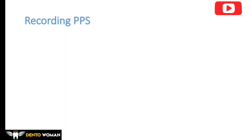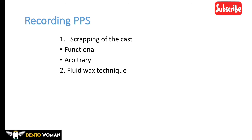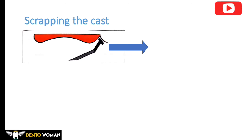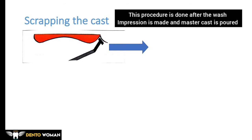There are basically two methods to record the posterior palatal seal: scrapping of the cast and the fluid wax technique. The major difference between the two is at which step the posterior palatal seal is recorded. In the conventional scrapping approach, this procedure is done after the wash impression is made.